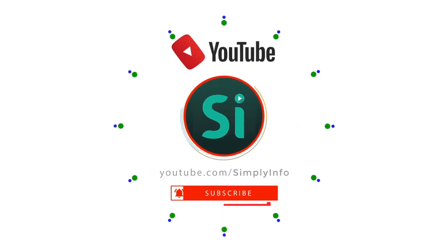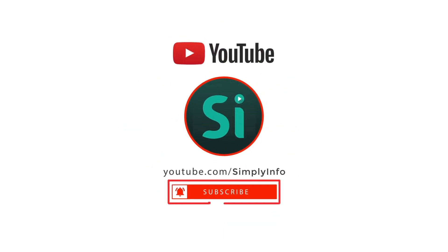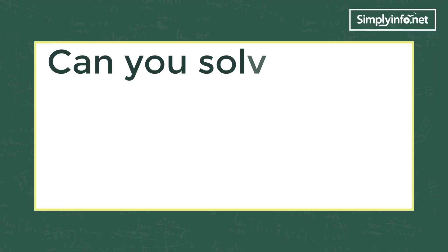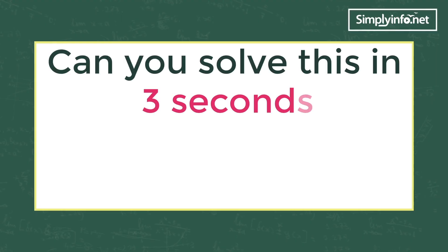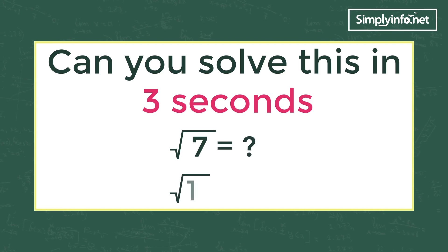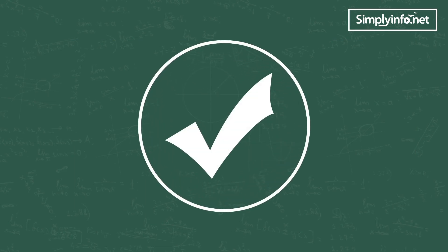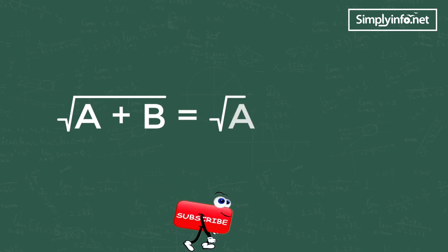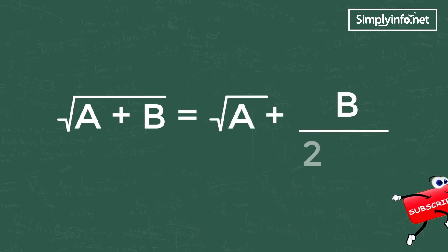Can you solve this in 3 seconds — square root of 7 is equal to how much? Square root of 17 is how much? Well, the answer is yes if you know this formula: root of (a + b) is equal to root a plus b divided by 2 root a.